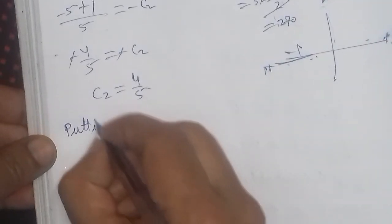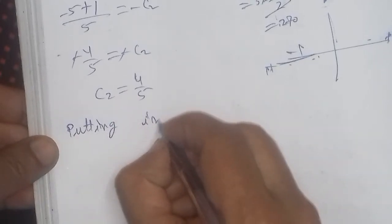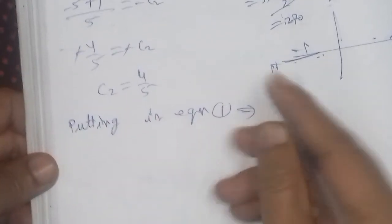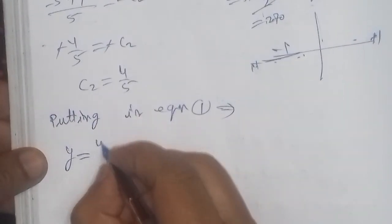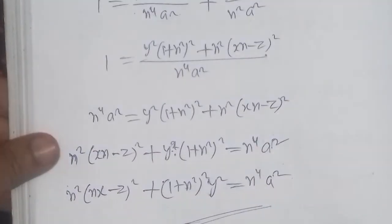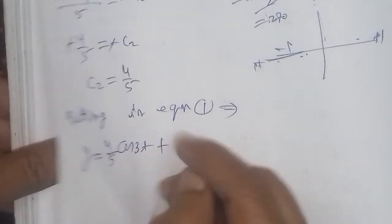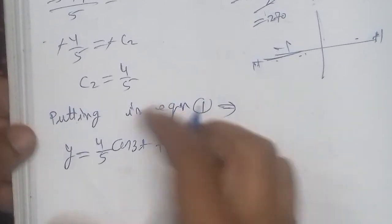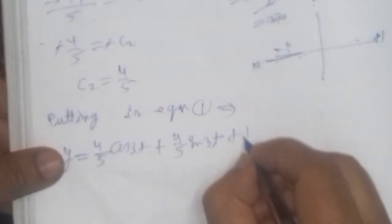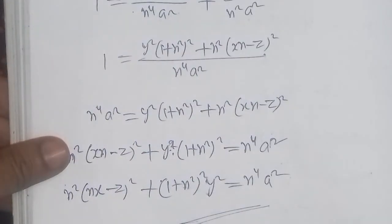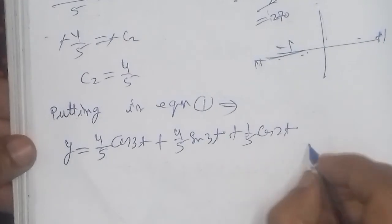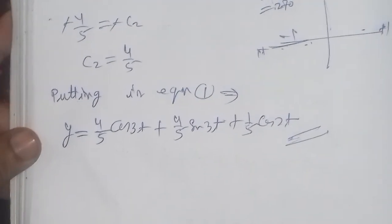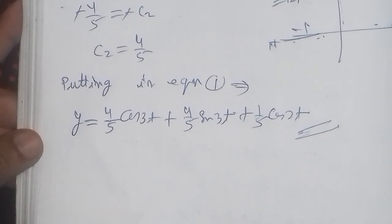Substituting c1 = 4/5 and c2 = 4/5 back into the general solution, the particular solution is: y = (4/5)cos(3t) + (4/5)sin(3t) + (1/5)cos(2t). Thank you very much for listening. Alhamdulillahi rabbil alameen.